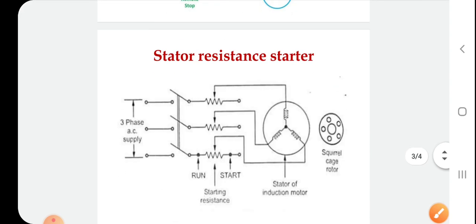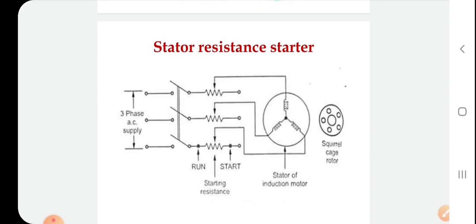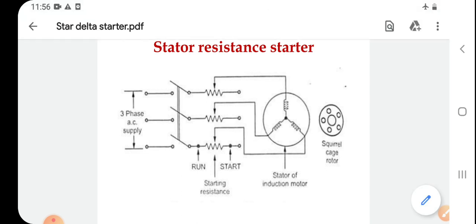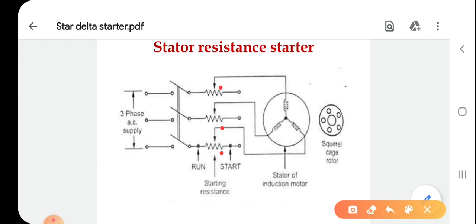Now let us discuss the stator resistance starter. This is the schematic diagram of the stator resistance starter. A reduced voltage is applied to the stator of the induction motor. Three resistances are added in series with each phase of the stator winding. Initially, the resistances are kept at maximum position in the circuit, due to which a large voltage drop occurs across the resistance.